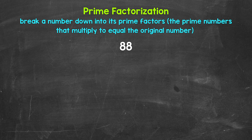So looking at 88, we need to start breaking this down by thinking of two factors — two numbers that multiply to give us 88. Well, 8 and 11 are factors of 88. 8 times 11 equals 88. So let's break this down into 8 and 11.